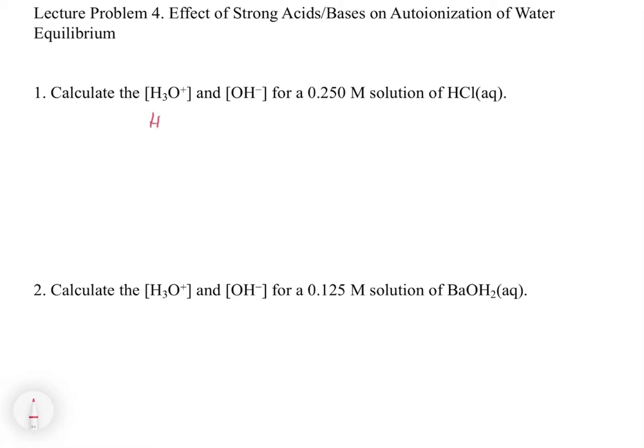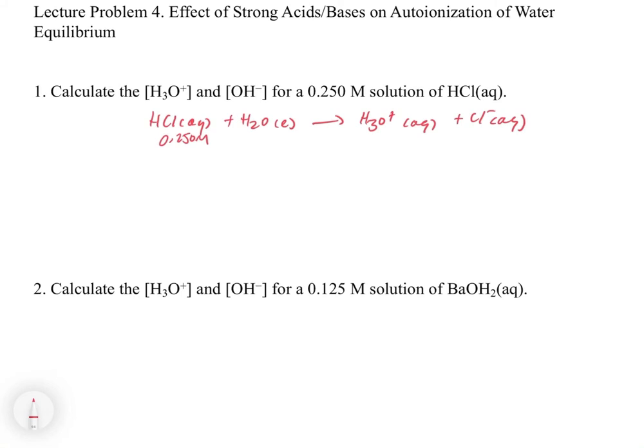So when we put HCl into water, this HCl, being a strong acid, is going to go in the forward direction. And notice I don't write an equilibrium, because we're working with a strong acid, to make H3O+ aqueous and Cl- aqueous. And so if we start with 0.250 molar of HCl, since there's a one-to-one stoichiometric coefficient, we're going to wind up with 0.250 molar H3O+ once this thing ionizes in water.